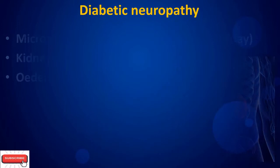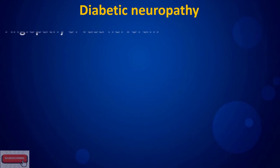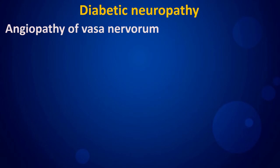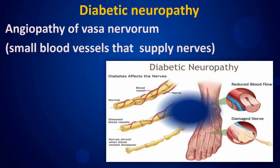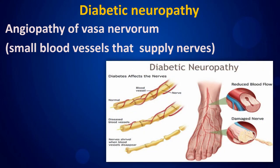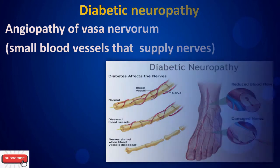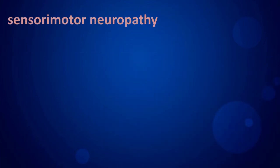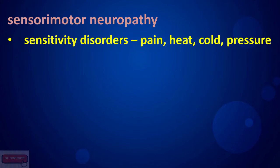Diabetic neuropathy involves angiopathy of the basal nerve. Sensorimotor neuropathy presents with sensitivity disorders including pain, numbness to cold, and changes in pressure sensation.